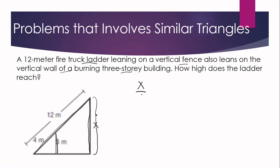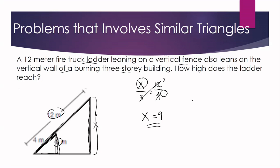Let X be the height the ladder reaches. Its corresponding side measures 3 meters, so we have X over 3. Since we started with X from the larger triangle, we use the ladder length of 12 meters next, and its corresponding side in the smaller triangle is 4 meters, giving us 12 over 4. Our equation is X/3 = 12/4. Simplifying 12/4 gives 3/1. Cross-multiplying: 1 × X = 3 × 3, so X = 9. Therefore, the ladder will reach 9 meters.